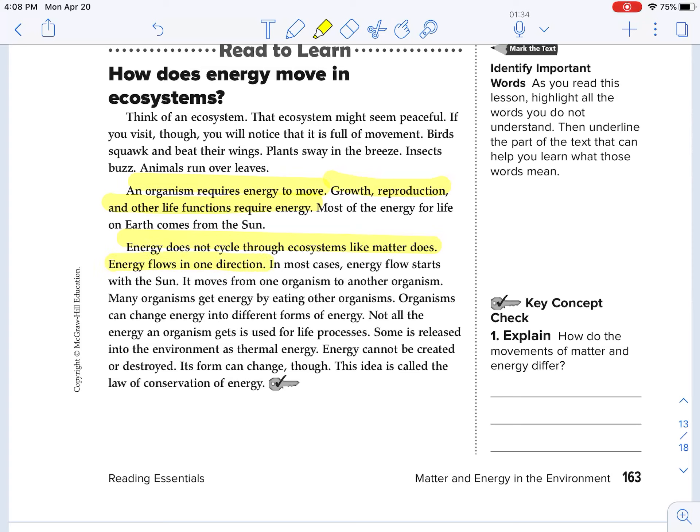Energy flows in one direction. So that's going to be a question that is on your study guide. In most cases, energy flow starts with the sun. It moves from one organism to another organism. Most organisms get energy by eating other organisms. Organisms can change energy into different forms of energy. Not all the energy an organism gets is used for life processes. Some is released into the environment as thermal energy. Energy cannot be created or destroyed. Its form can change, though. This idea is called the law of conservation of energy.